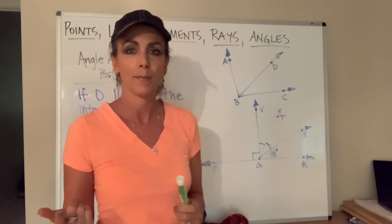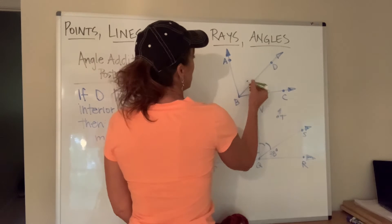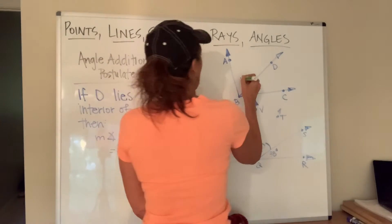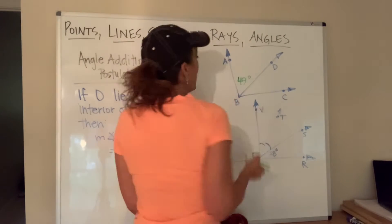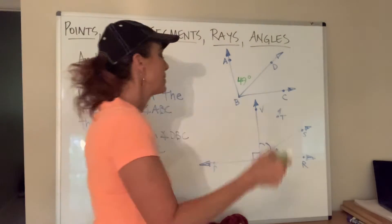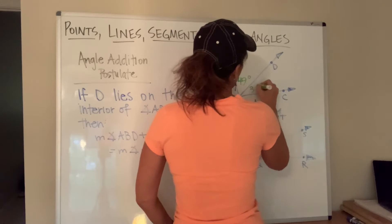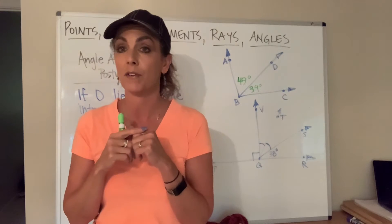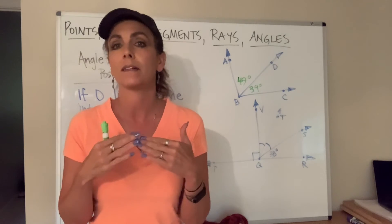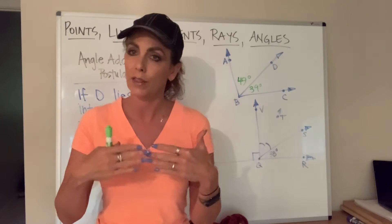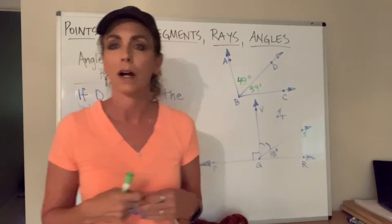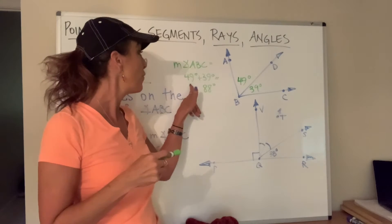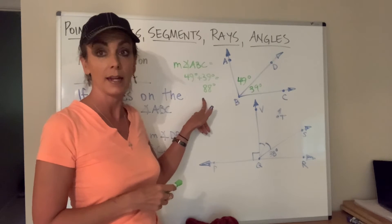So we will use this a lot in examples like this. Let the measure of angle ABD be 49 degrees and let the measure of angle DBC be 39 degrees. What then is the measure of angle ABC? We could just add those two angle measures together. We can say the measure of angle ABC is 49 degrees plus 39 degrees, which is 88 degrees.